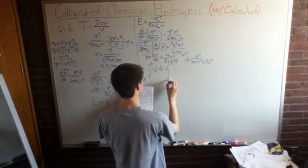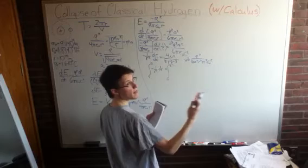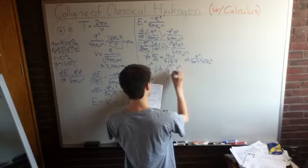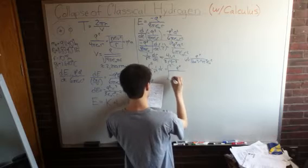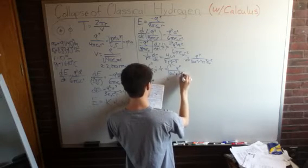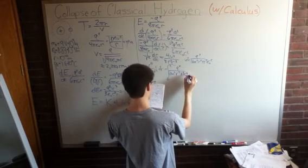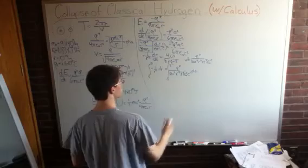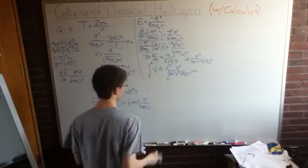So, it equals the integral from 0 to, we'll call it tau for the time of collapse, of q to the 4th divided by 12m squared r to the 4th pi squared epsilon naught squared c cubed dt. And if you do this integral, this is easy, just multiply by t, and this is just as straightforward,